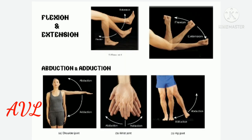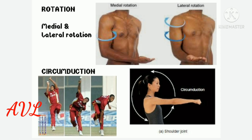Flexion is when two flexor surfaces are brought close to each other. Extension is when dorsal surfaces are brought into as much approximation as possible. Abduction is when a limb is taken away from the body; adduction is when a limb is brought close to the body. Rotation towards the midline is called medial rotation; rotation away from the medial plane is called lateral rotation. Circumduction is a movement of the distal end of a body part in a circle, and is a combination of flexion, extension, abduction, adduction, medial rotation, and lateral rotation.